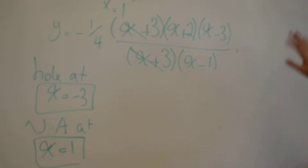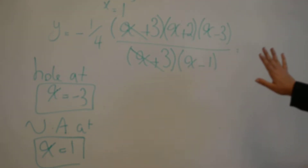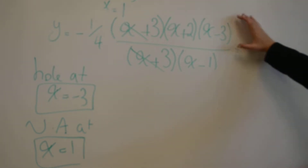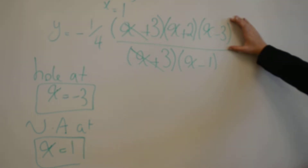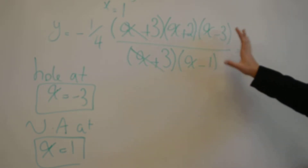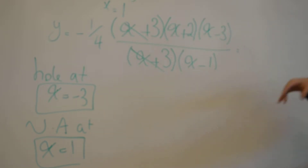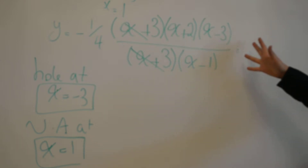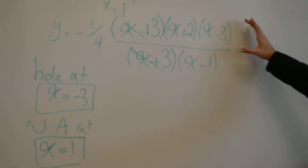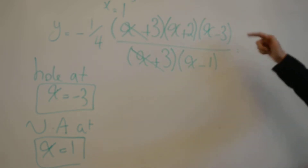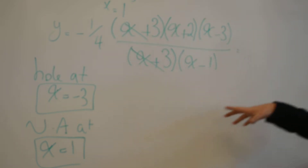We do not have any horizontal asymptotes in this function because the numerator has a bigger degree than the denominator and they are not equal. Because our numerator has one degree more than the denominator, we will have a slant asymptote.